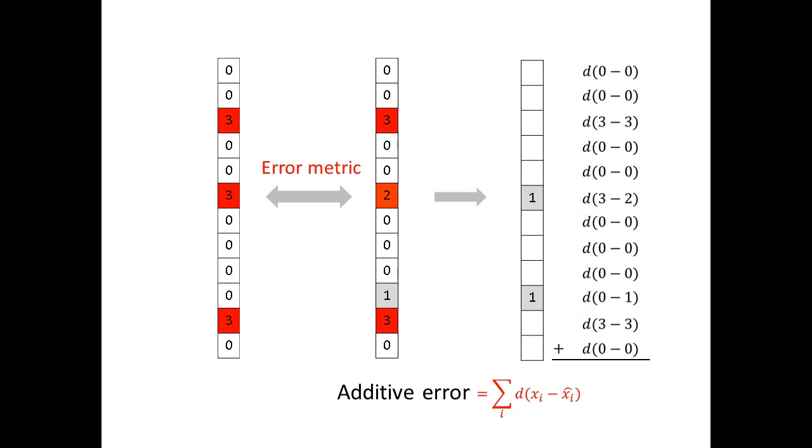We then compute the error metric as a function of the error vector. The error metric has an additive form, where on the slide, the function d is a scalar function, meaning that it's a function that is applied to only one of the entries of the error vector. We aggregate, or sum up, over all the values of these scalar functions for all the entries of the error vector.